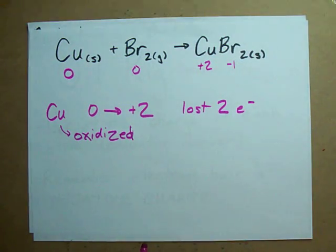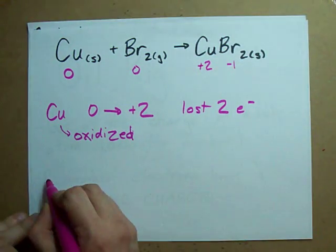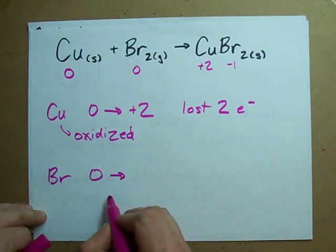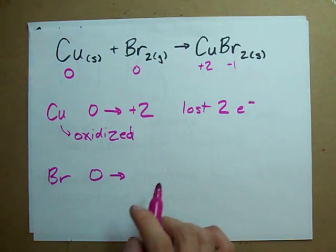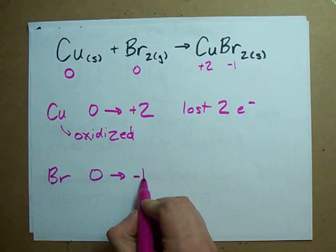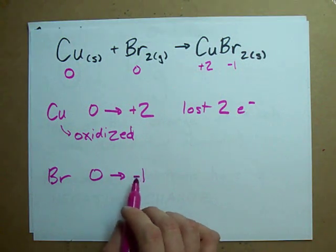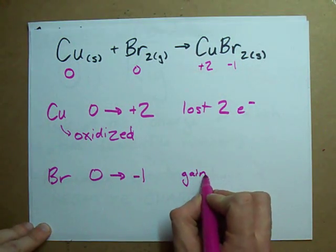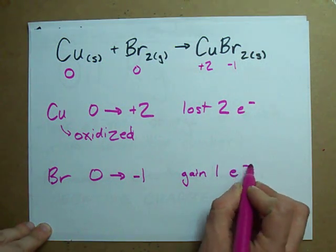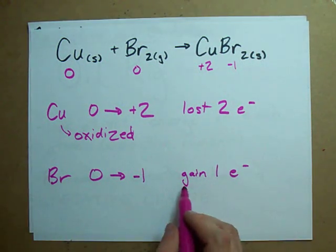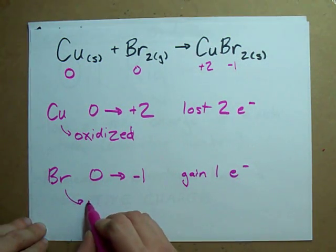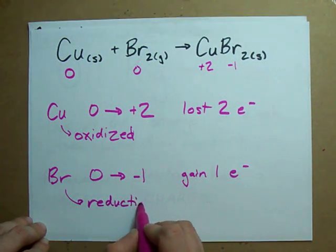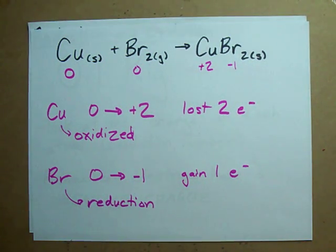That's how you can tell. The Br had a charge of zero and the charge changed to minus one — that got more negative. Each of the bromines gained one electron. A gain of electrons? Reduction is a gain of electrons, so the bromine was reduced.